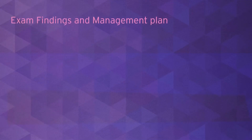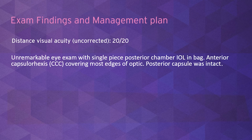On examination, the visual acuity was 20/20 in the right eye. A single-piece intraocular lens was present in the capsular bag. The lens material appeared to be acrylic, and the capsulorhexis margin overlapped the edge of the optic 360 degrees. The posterior capsule was intact.